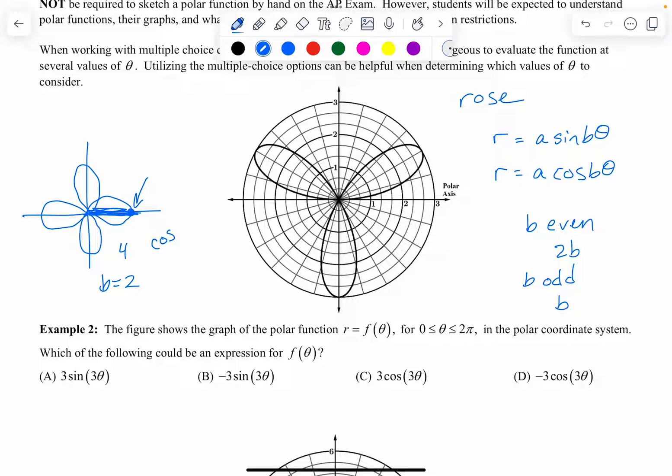And so then the A value just is going to be the length of that petal. So looking back to this one, I see a petal that's got a length here of three. So we see that it goes out to a three, but all of these have an A value of three. So that's not very helpful. Instead we're going to need to use something else. And one of the things is that we don't have this point on our curve. Okay. So if we did, that would tell us it was cosine instead of sine. So I can get rid of the cosine options.